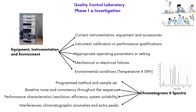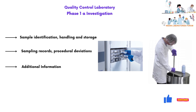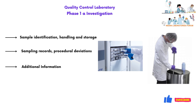Review of chromatograms and spectra includes: programmed method and sample set, baseline noise and consistency throughout the sequence, review of performance characteristics such as resolution, efficiency, and system suitability, review of interferences, chromatographic anomalies, and extra peaks. Review of sample identification, handling and storage conditions, review of sampling records and procedural deviations, and any other data review for additional information about root cause.